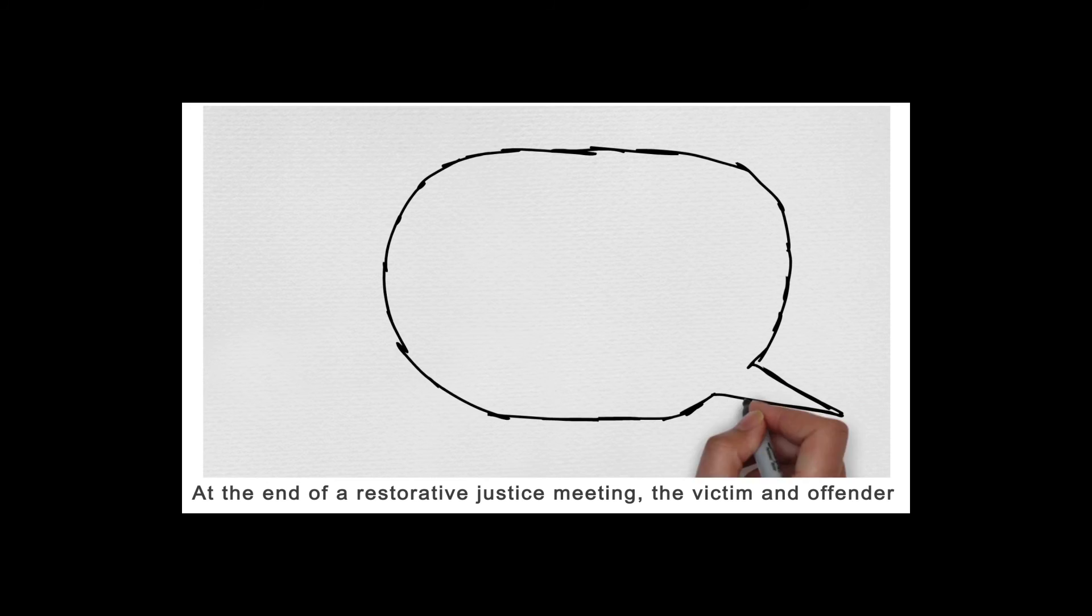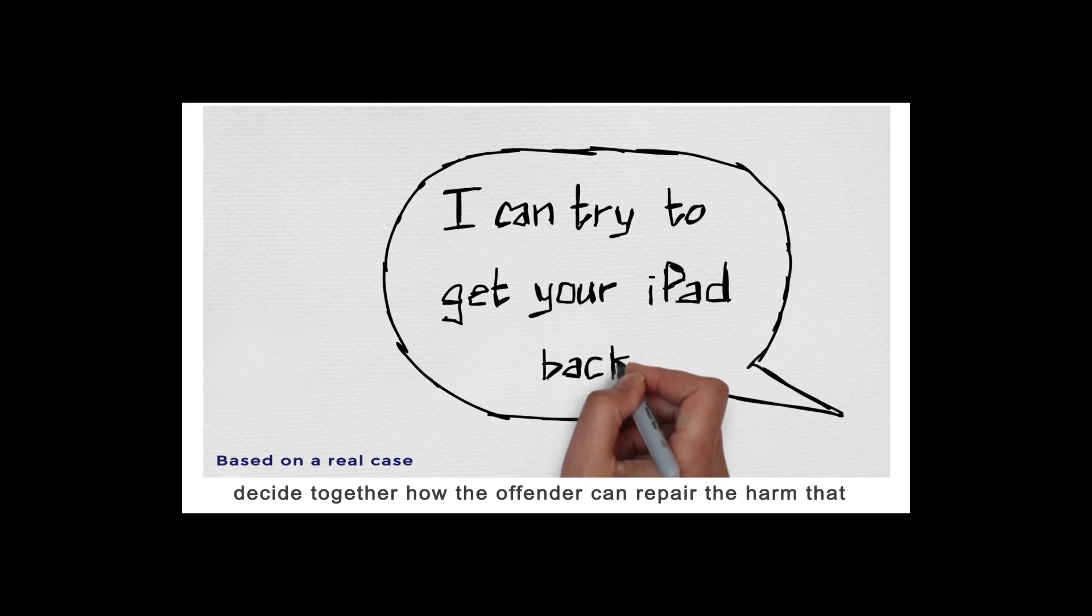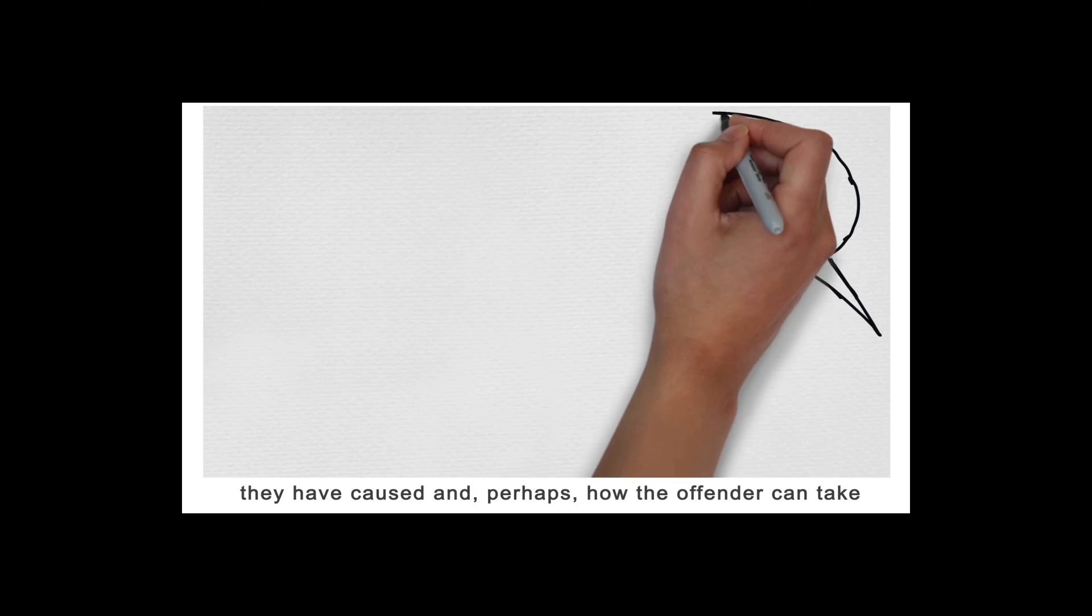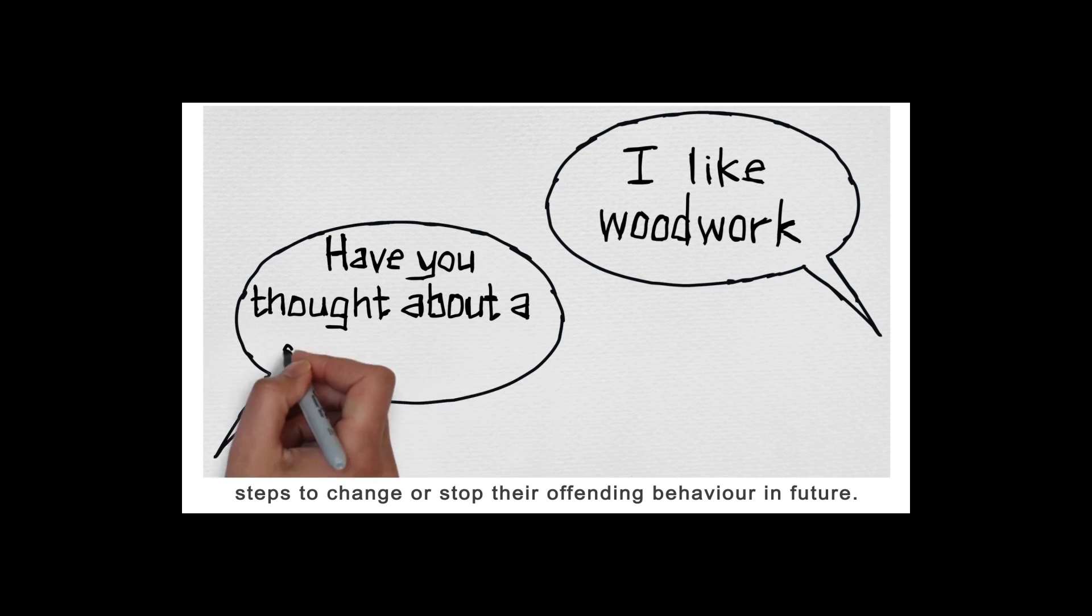At the end of a restorative justice meeting, the victim and offender decide together how the offender can repair the harm that they've caused and perhaps how the offender can take steps to change or stop their offending behaviour in future.